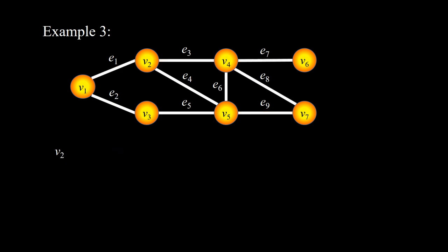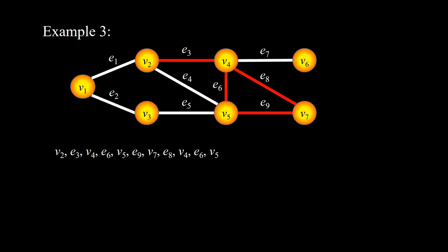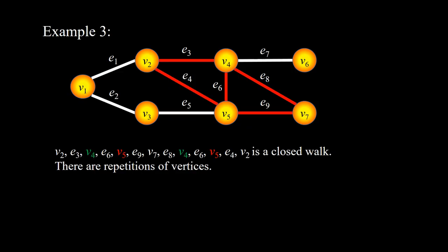Starting with V2, then E3, V4, E6, V5, E9, V7, E8, V4, E6, V5, E4, V2. This is an example of a V2-V2 closed walk. Here the vertex V4 is repeated and the edge E6 is also repeated.